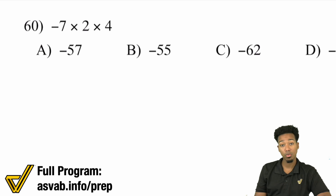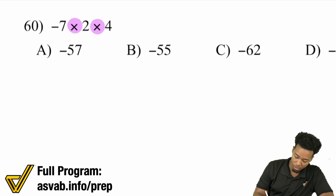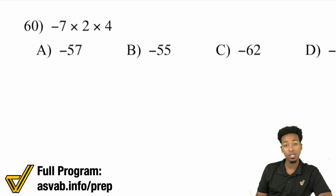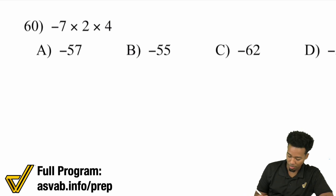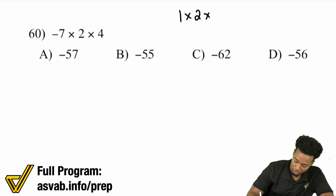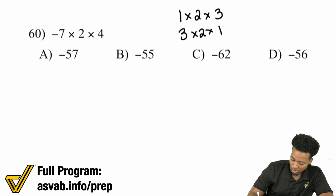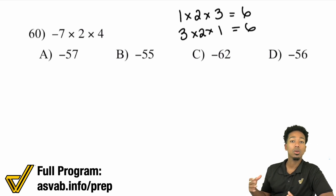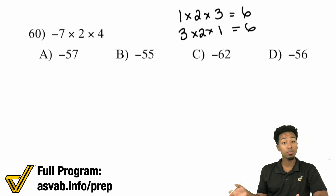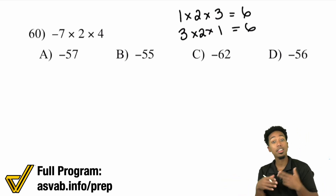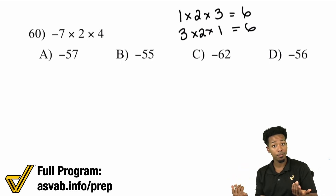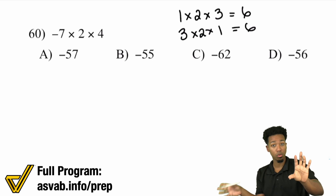Number 60: we have negative 7 times 2 times 4. Since we're multiplying all the way through, remember you can multiply in any order that makes sense to you. If you say 1 times 2 times 3, that's the same thing as 3 times 2 times 1 — both give you 6. So knowing that, if you're just multiplying straight through, you can multiply in whatever order you want. That works when you're doing the same operation — either addition or multiplication.